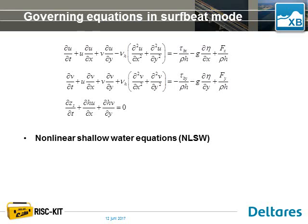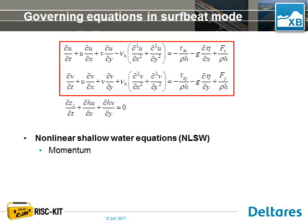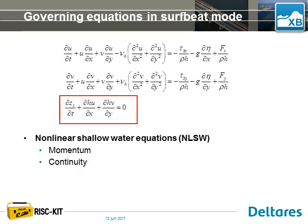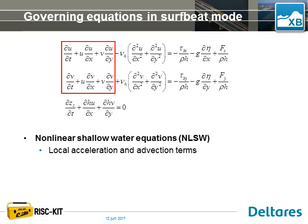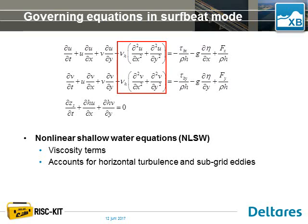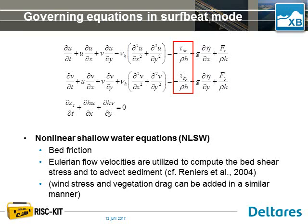We solve for momentum in the U (X) direction and the V (Y) direction, and also solve for continuity. All equations are solved using the Lagrangian velocities UL and VL. The components include local acceleration and advection terms (du/dt, u·du/dx, v·du/dy), viscosity terms accounting for horizontal turbulence and sub-grid eddies, and a bed friction term where we use the Eulerian flow velocities to compute the bed shear stress. We can also account for wind stress and vegetation drag.